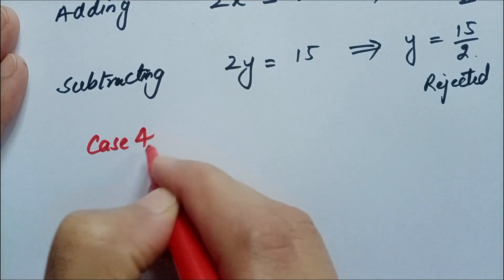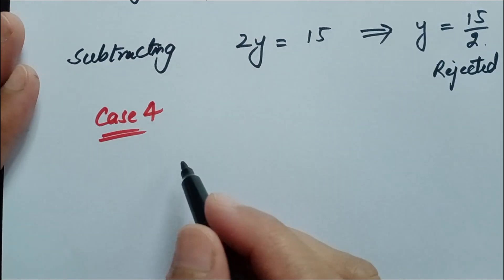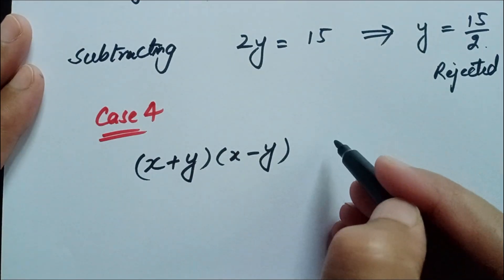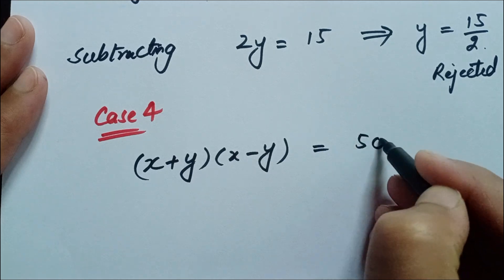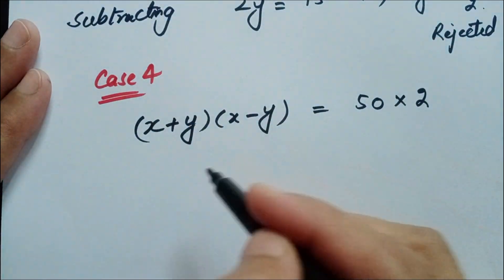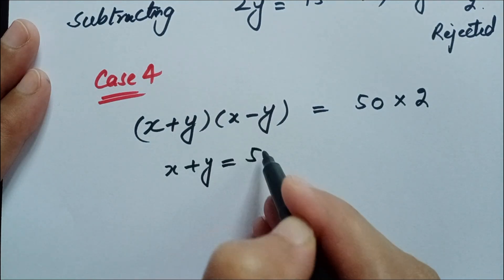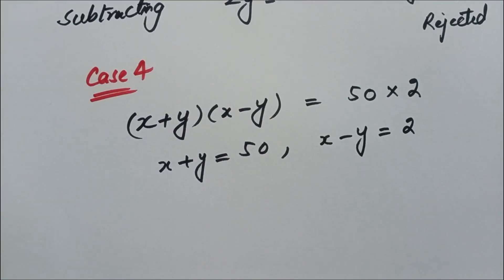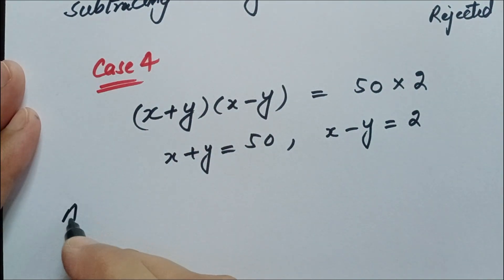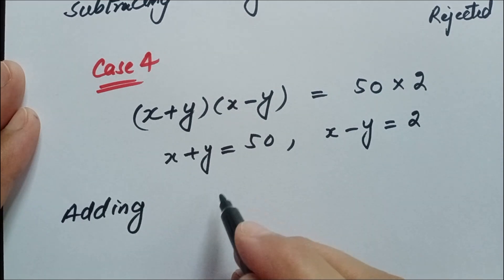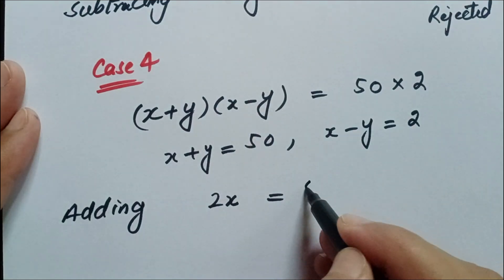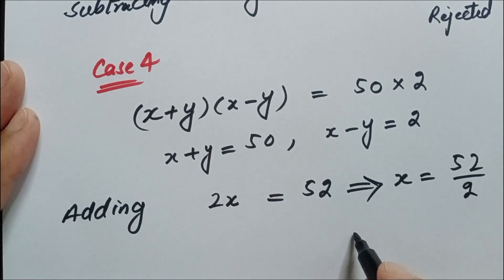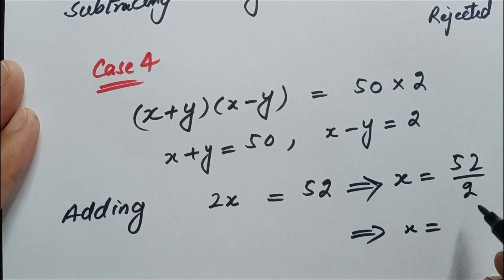Case 4: x plus y times x minus y equals 50 multiplied by 2, so x plus y equals 50 and x minus y equals 2. By adding these two equations, 2x equals 52, which implies x equals 52 over 2, so x equals 26.